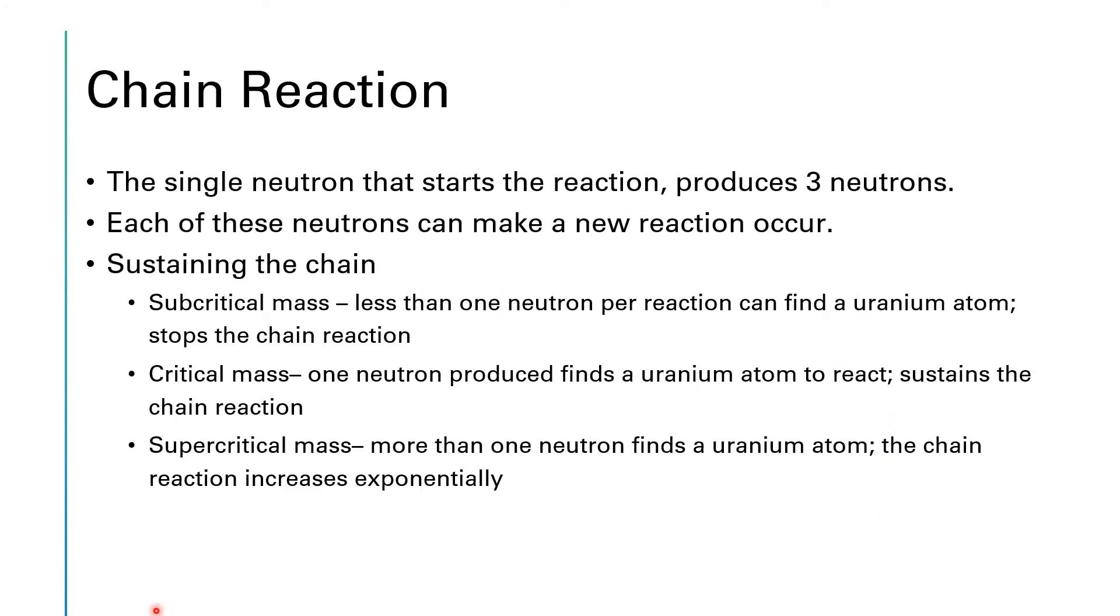Let's put this into words. A chain reaction is illustrated by this nuclear fission process because that single neutron that starts the reaction can produce up to three neutrons. Each one of those neutrons can make a new reaction occur. If we have what's called a subcritical mass, those neutrons get absorbed by something else. With a subcritical mass, less than one neutron from each reaction can find another uranium atom to react with and that pretty much stops the chain reaction.